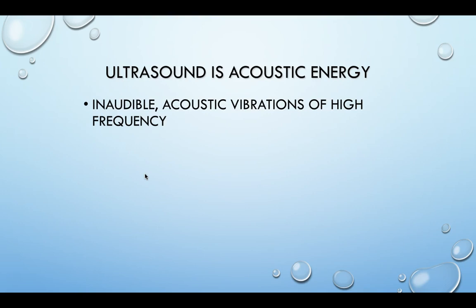We're talking about inaudible acoustic vibrations at a pretty high frequency. Ultrasound is typically somewhere between 750,000 hertz up to 3 million hertz, which we usually express in megahertz — so 0.75 to 3 megahertz. Just to compare, audible sound is somewhere between 16 to 20 kilohertz, so significantly lower — hence the name 'ultra' sound.